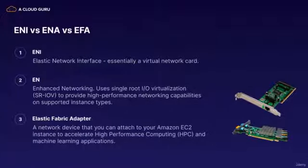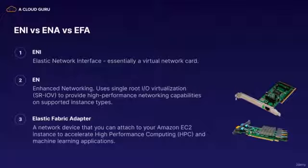We'll start with ENI — the Elastic Network Interface — and essentially it's just a virtual network card on your EC2 instance. We then have Enhanced Networking, which uses Single Route IO Virtualization, or SRIOV, to provide high-performance networking capabilities to supported instance types.